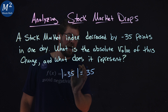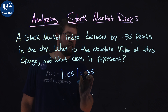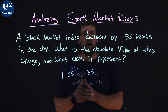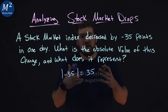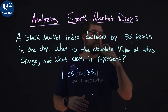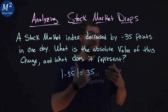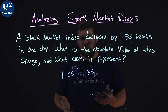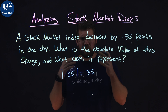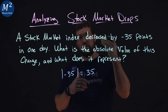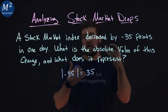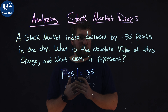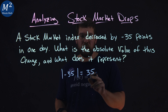What this absolute value of negative 35 equal to 35 tells us is the change that occurred. There was a change of 35 points. The word 'decrease' tells us we went down, but we changed 35 points — and that's what it's referring to. That absolute change from the previous value to where it is after one day was 35 points of difference.